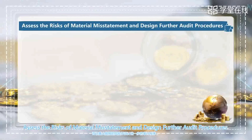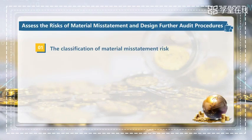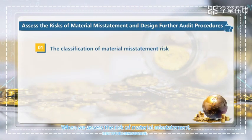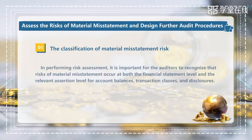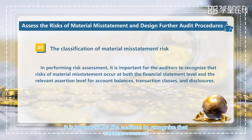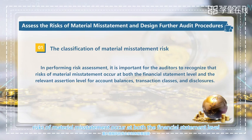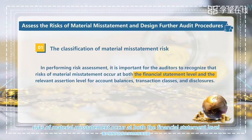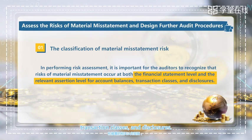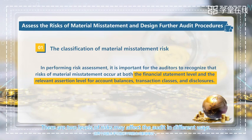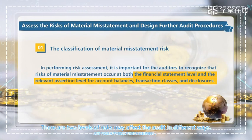Now let's assess the risk of material misstatement and design the audit procedures. When we assess the risk of material misstatement, we need to know the classification of material misstatement. In performing risk assessment, it is important for the auditors to recognize that risk of material misstatement occurs at both the financial statement level and the relevant assertion level for account balances, transaction classes, and disclosures. These two levels of risk may affect the audit in different ways.